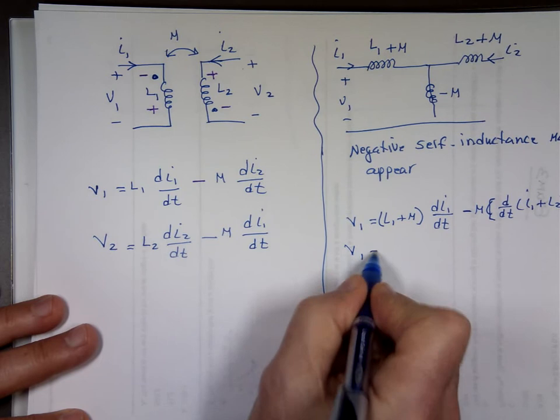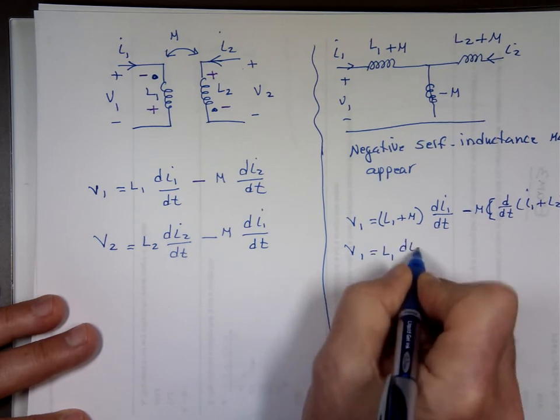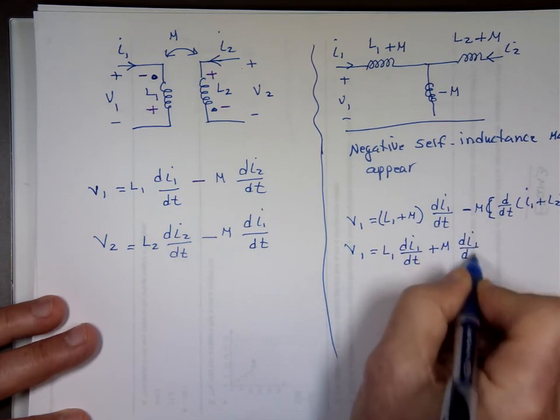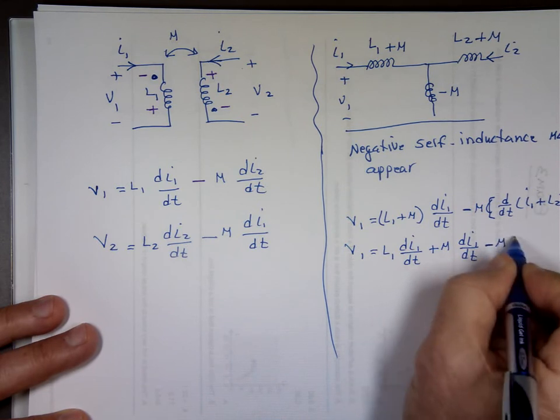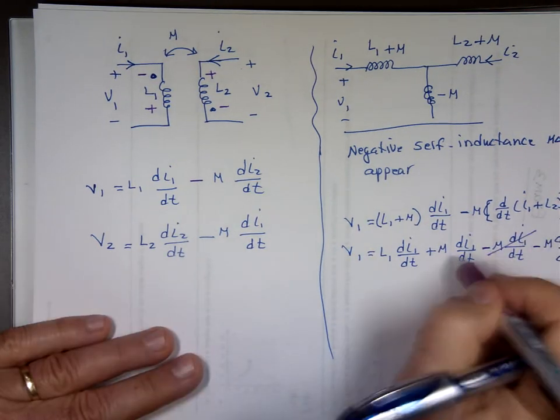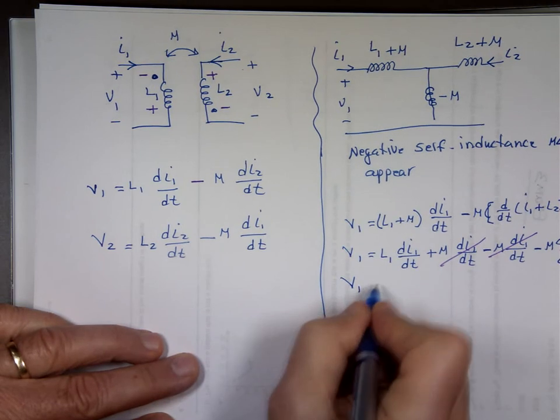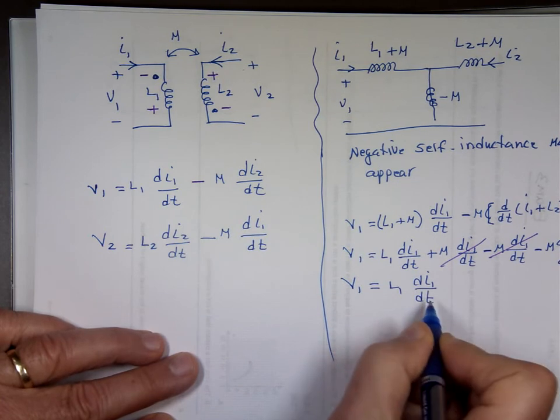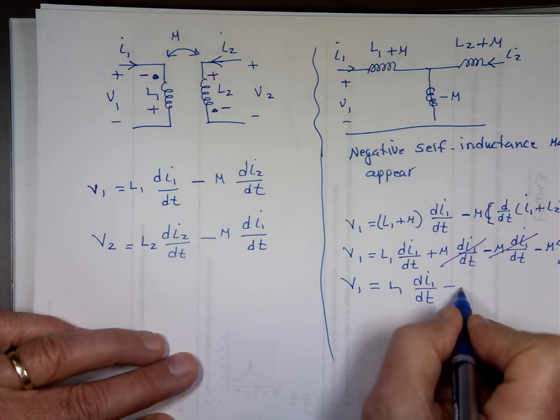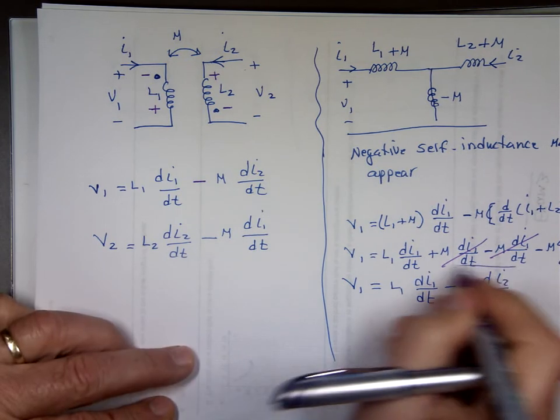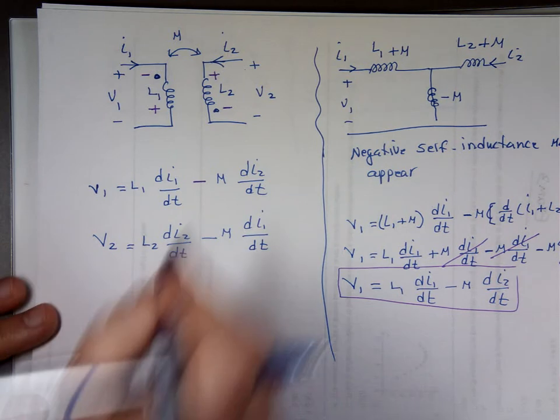So, if you open that one, L1, Di1, Dt plus M, Di1, Dt minus M, Di1, Dt minus M, Di1, Dt minus M, Di2, Dt. And notice this one should be the same as this one.